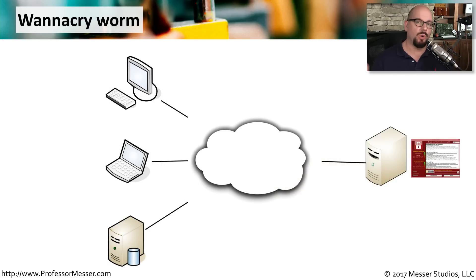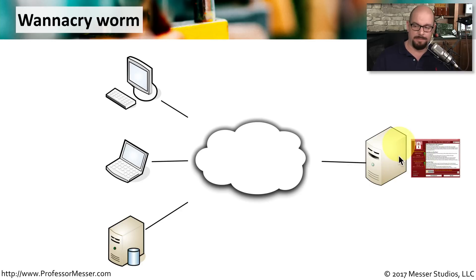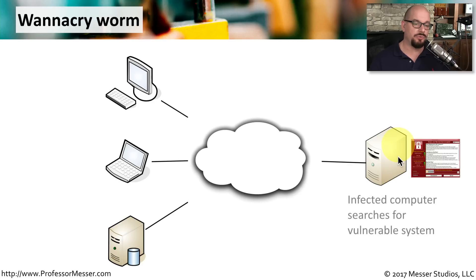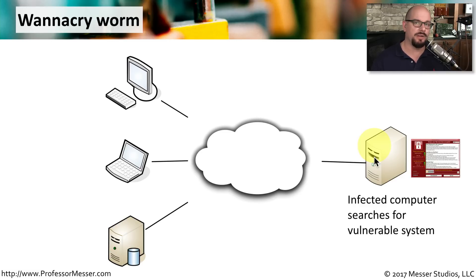Here are the steps that take place for a worm to propagate throughout networks, using the WannaCry worm — also called WannaCrypt — as an example, because it encrypted data on infected computers. It starts with a computer already infected and running WannaCrypt. That device scans the network to find another system with the same vulnerability. This worm exploited a vulnerability in Microsoft's SMB version 1, the Server Message Block protocol used to transfer files in Windows, affecting a large number of Windows systems.